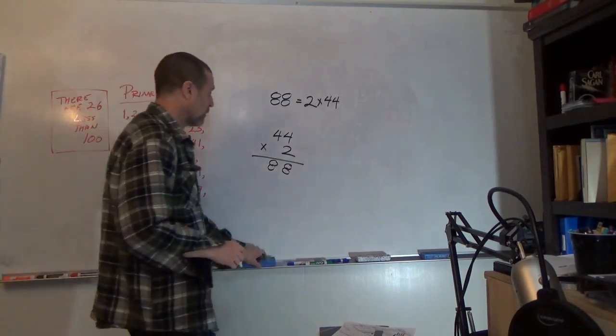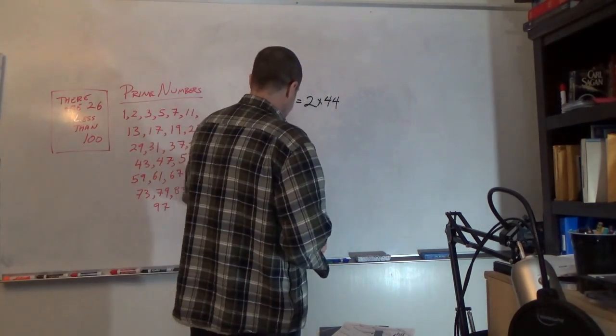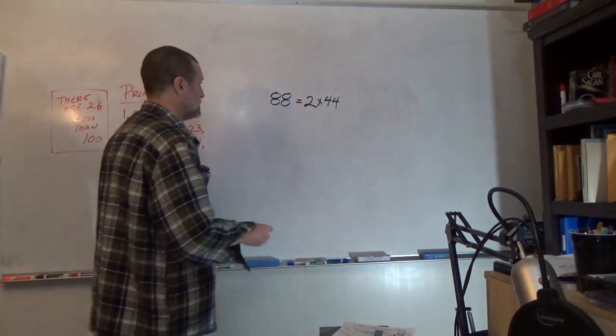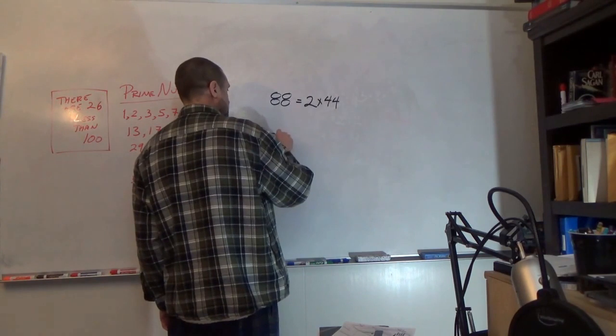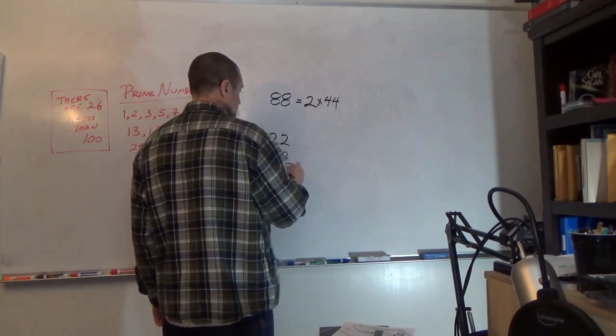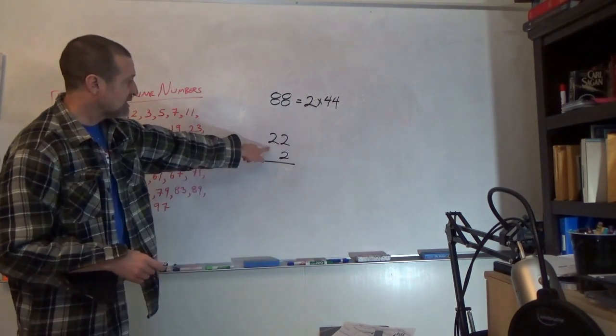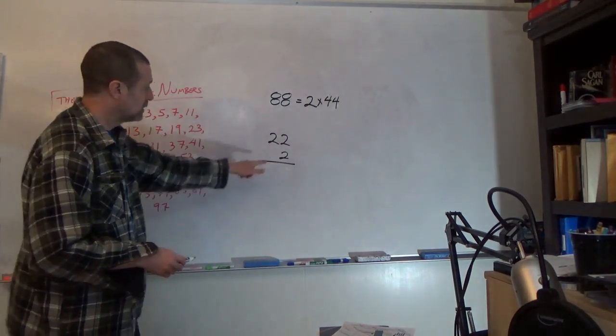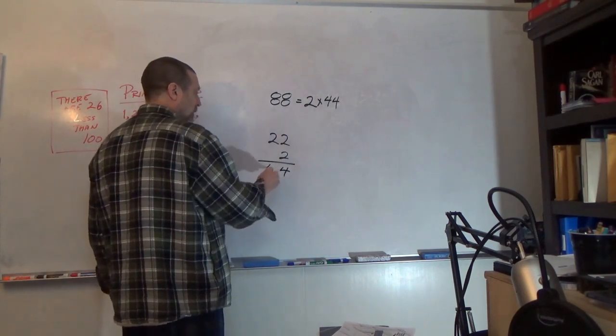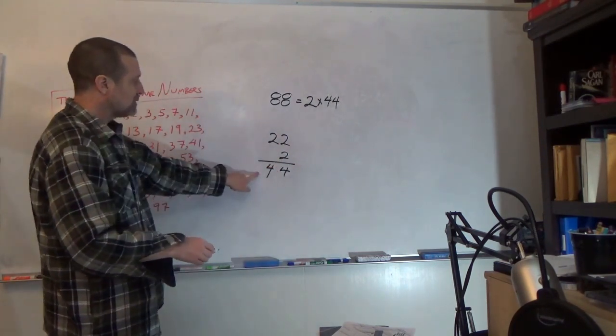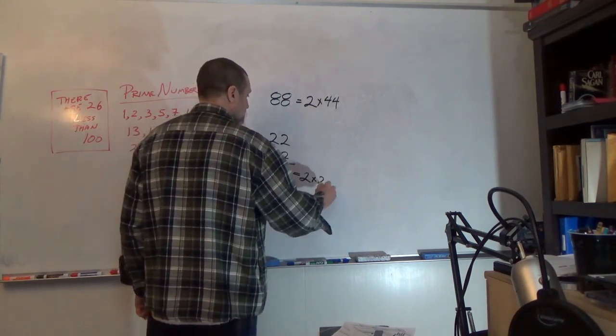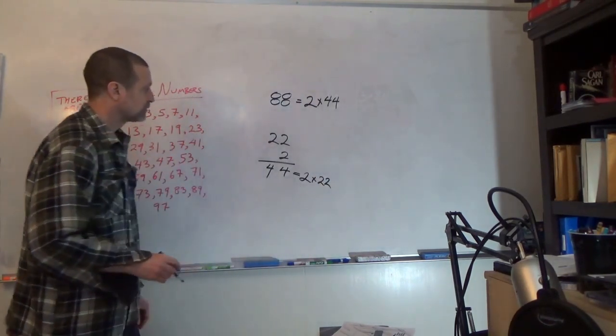So that means 44 has to be divisible by other prime numbers. And again, I'm going to point out, just based on my own experience, that I can take 22 times 2, 2 times 2 is 4, 2 times 2 is 4, that means 44 is equal to 2 times 22.